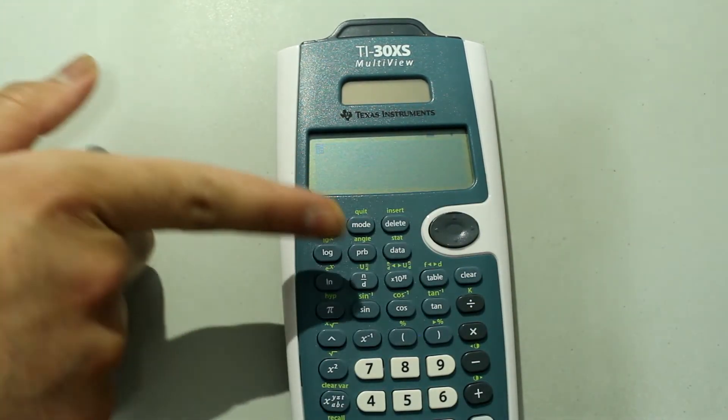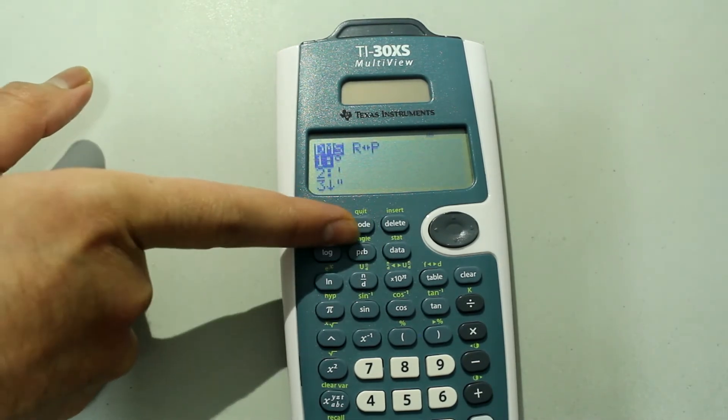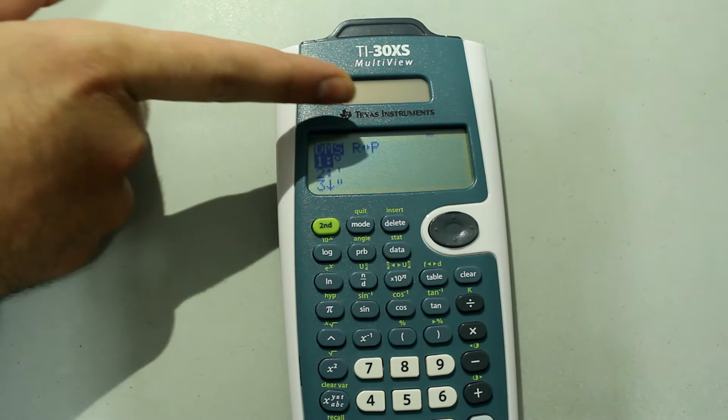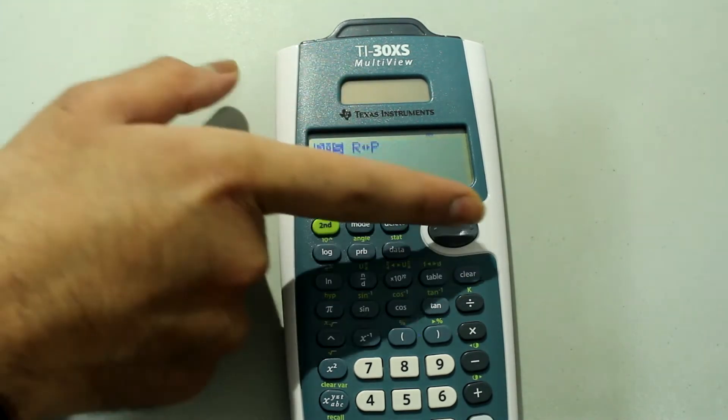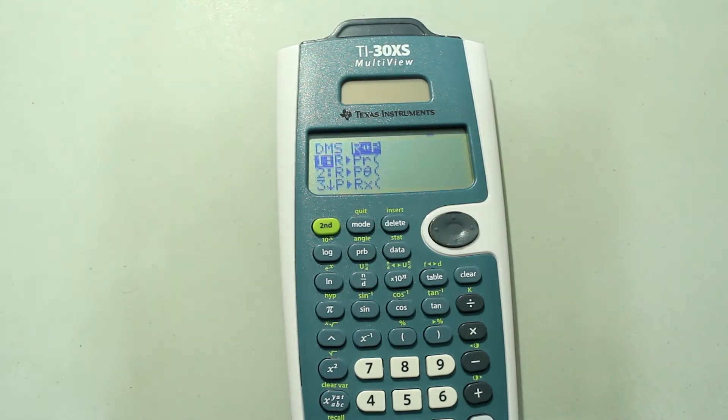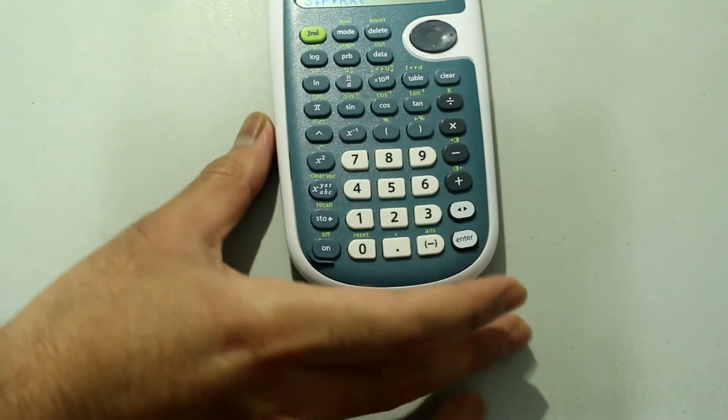Now press the second button and the probability button, the PRB button, to choose angle. Then you're going to go to the rectangular to polar menu, just arrow right, and now you're going to select the first option. Just press ENTER.